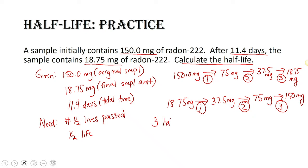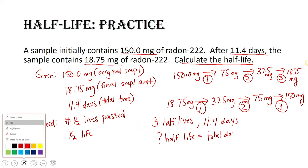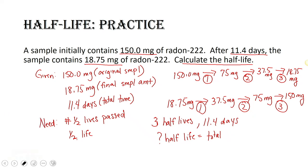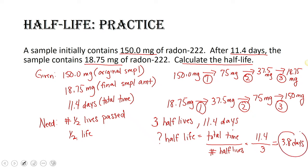We've got three half-lives and 11.4 days total. To find the actual half-life, take the total time divided by the number of half-lives. So we get 11.4 divided by 3, and we get 3.8 days. Our half-life is 3.8 days.